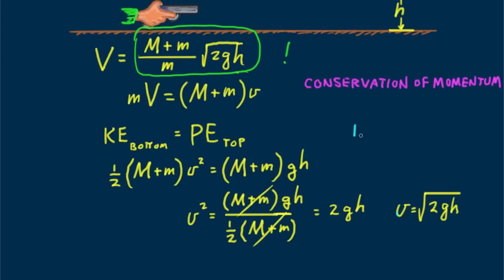Let me leave you with this question. If the same mass bullet were fired at twice the speed into the block, how much higher would the block swing? Until next time, good energy and good momentum.